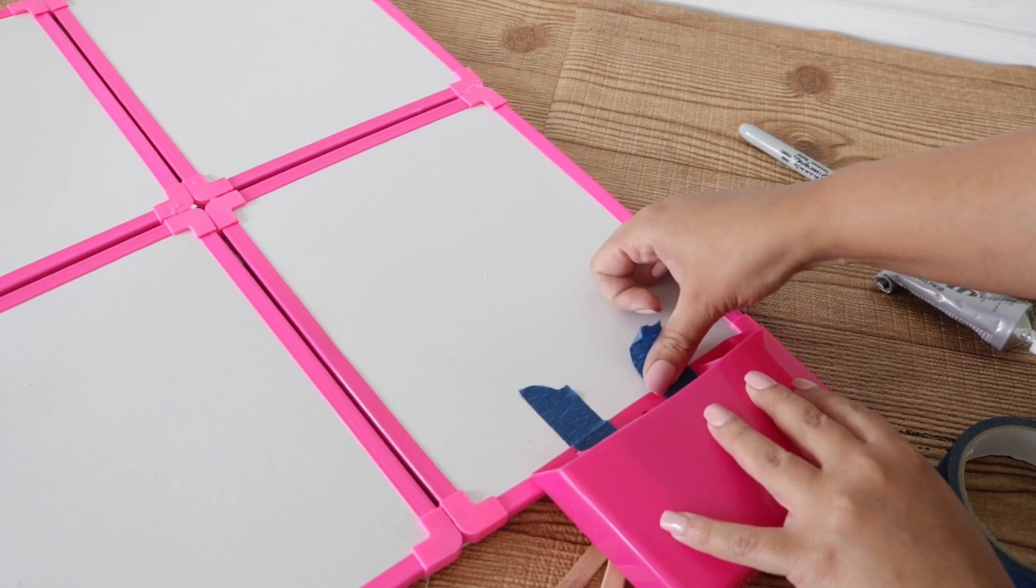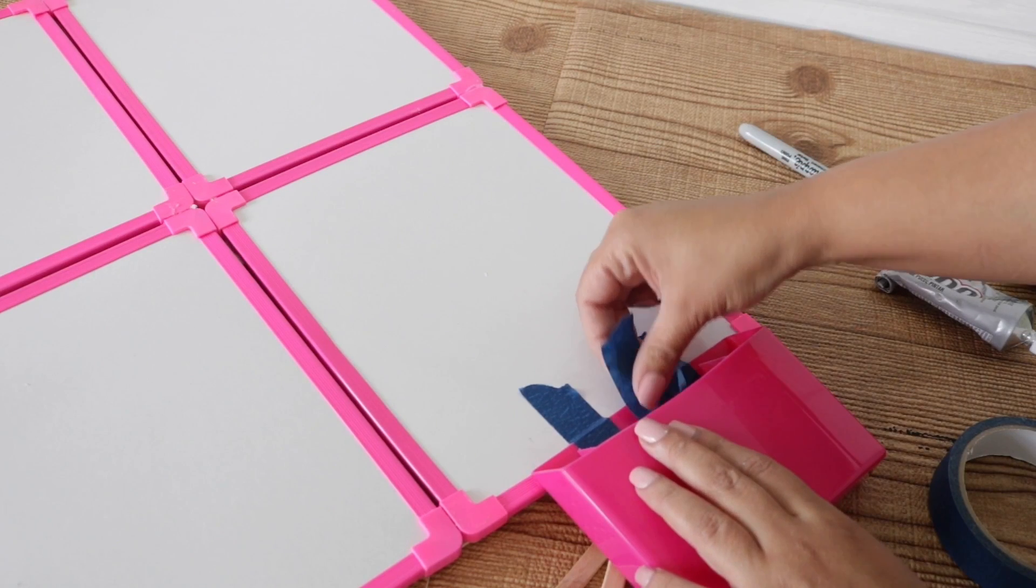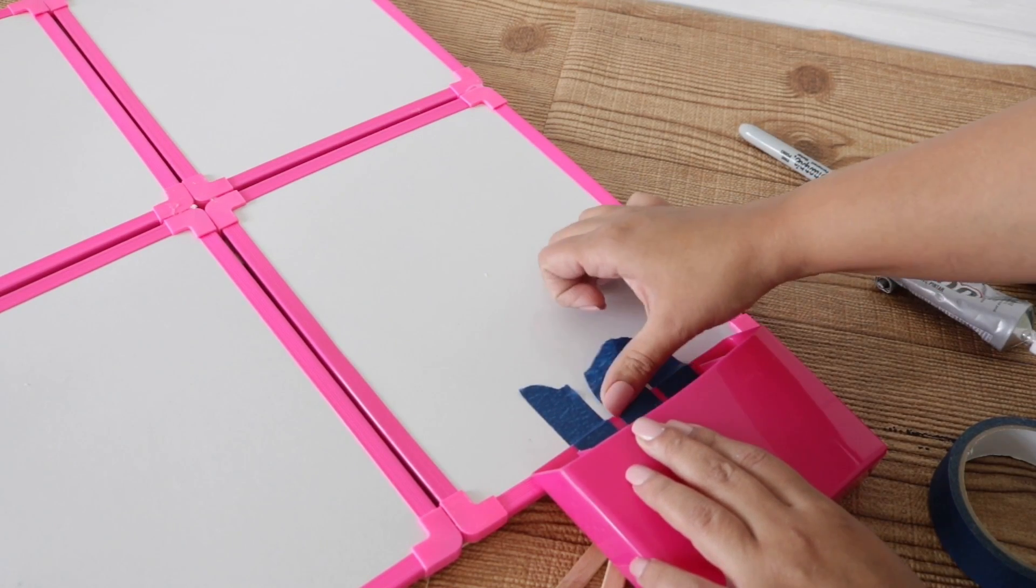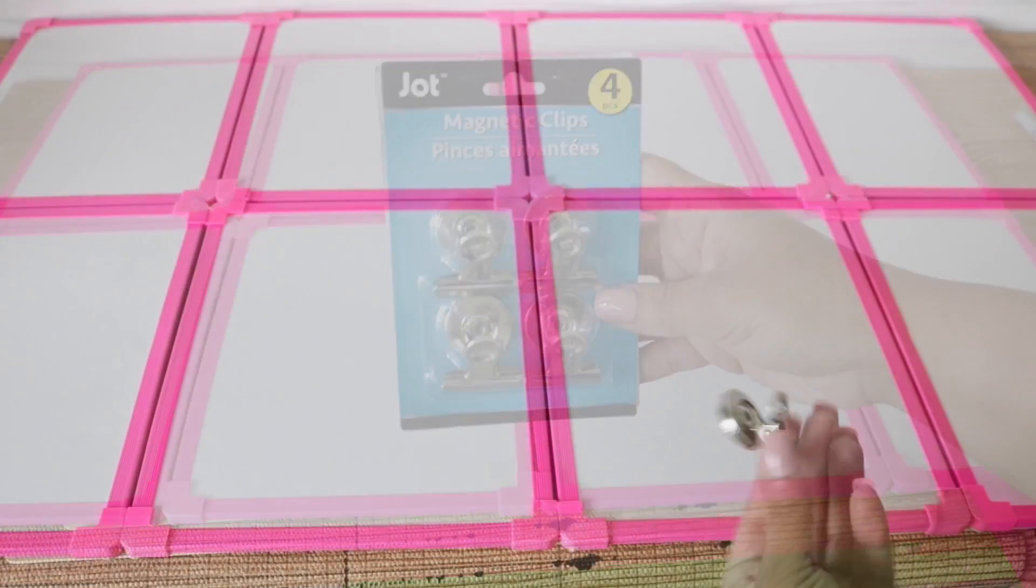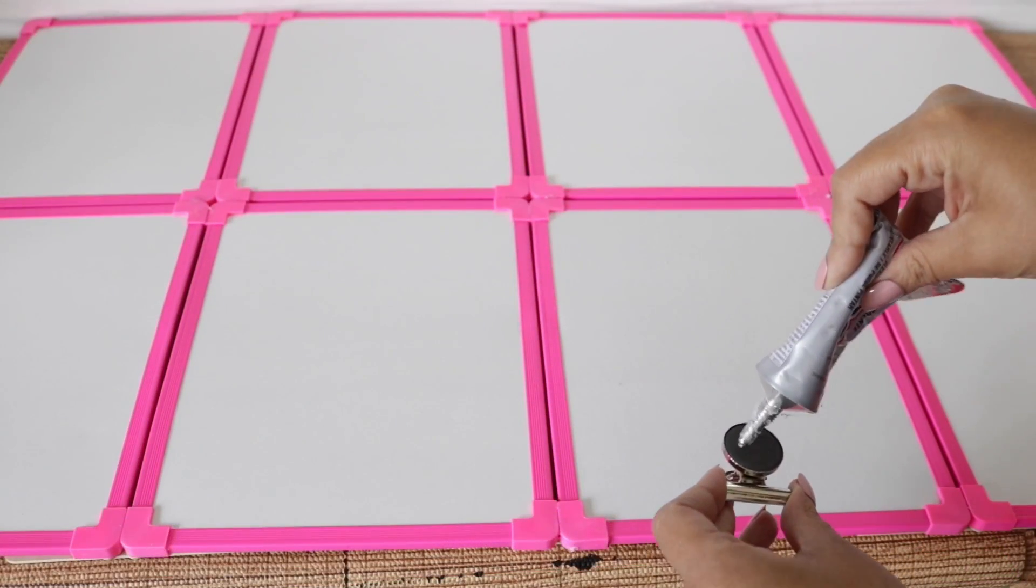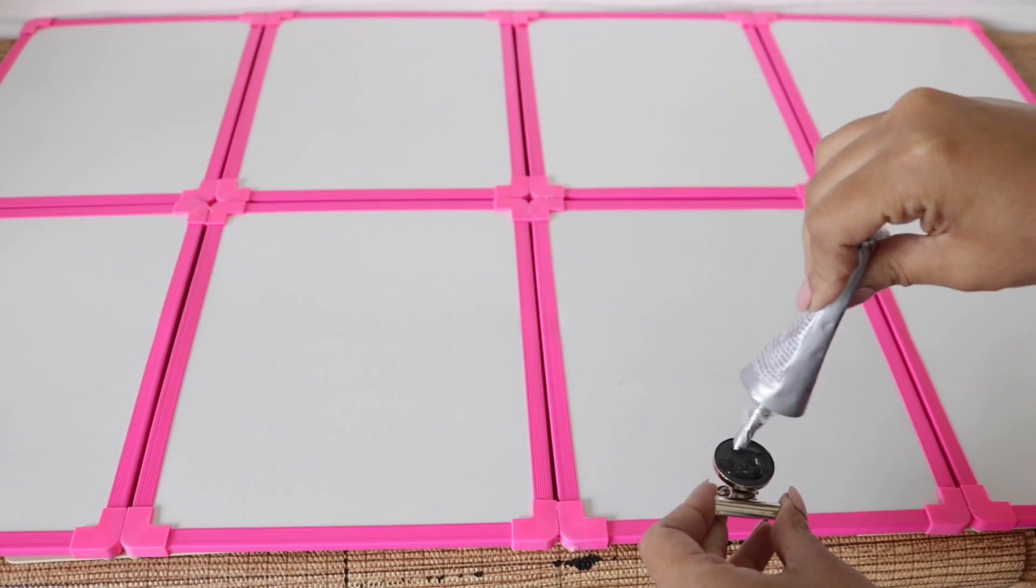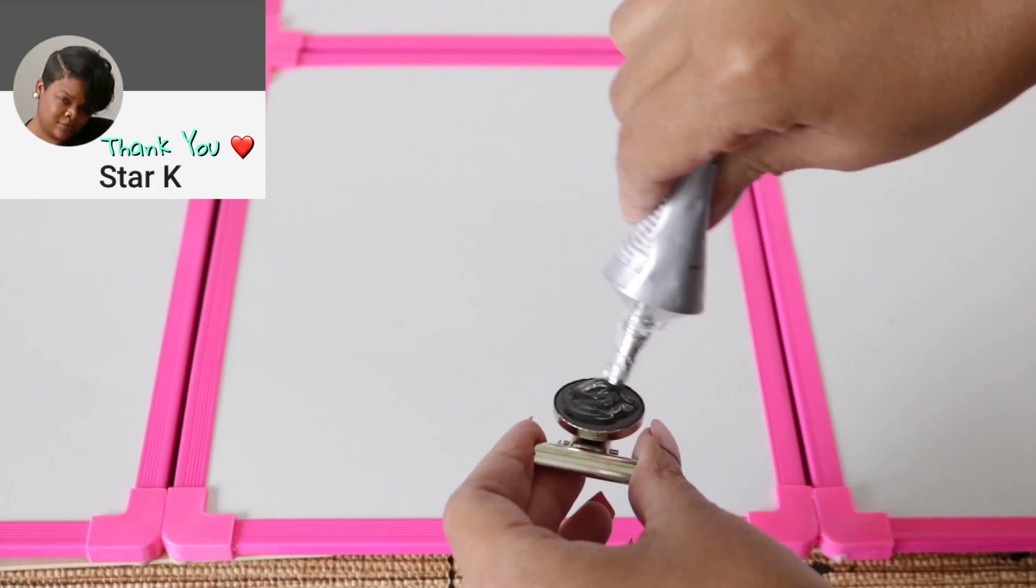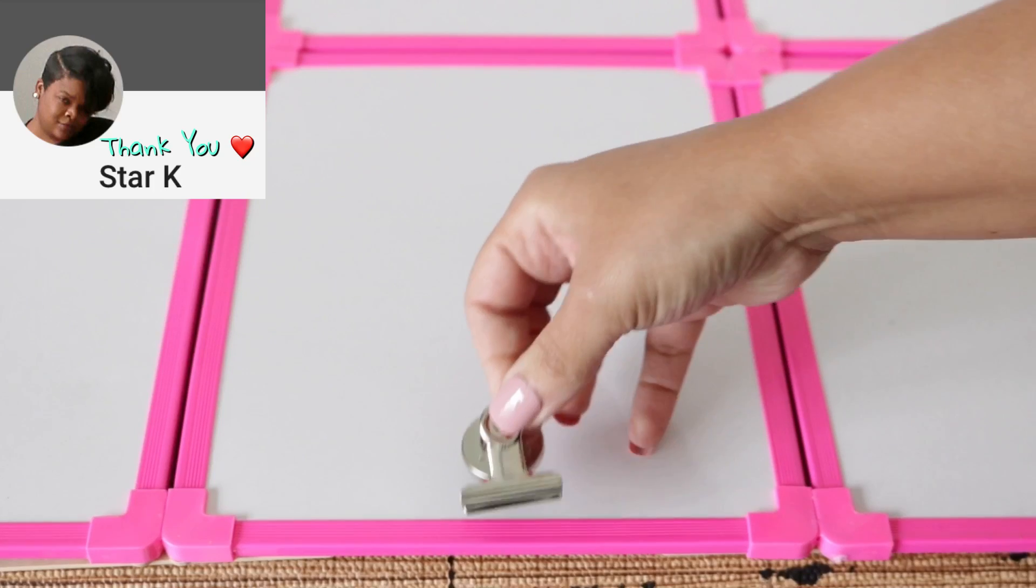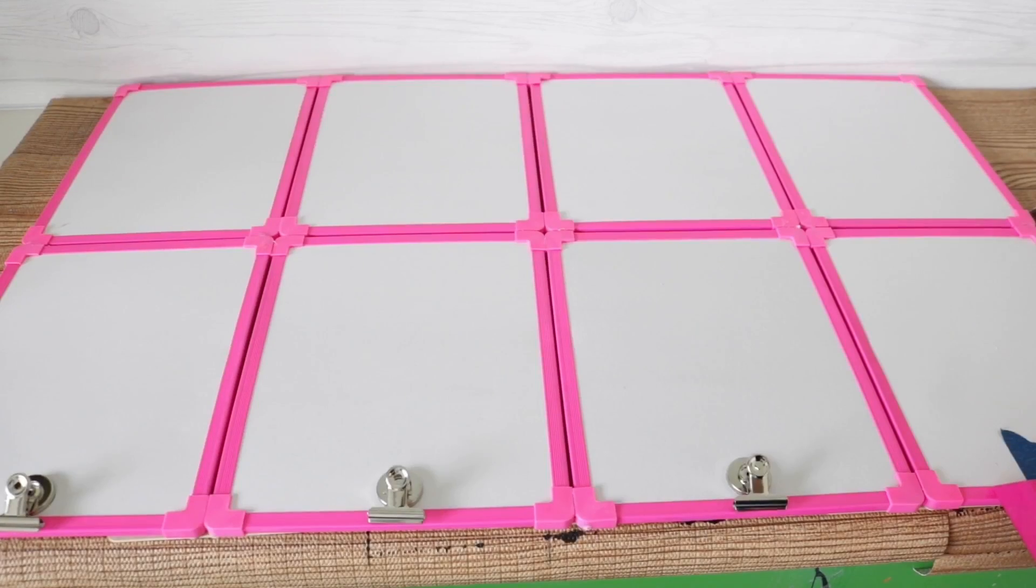Next I added these magnetic clips, which are also in the back to school section. These are just to hold a little fun notes or pictures. So I added E6000 directly to the back and then placed it in the middle of each frame.